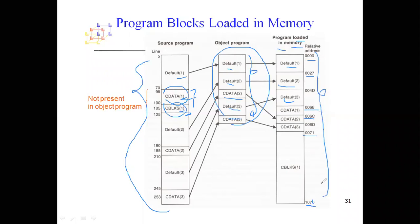This detailed explanation was to help you understand program blocks deeply. But for the exam, you only need to mention: there are three types of blocks, the block numbers assigned to each, the directive used (USE), how locations are calculated, and the structure of the LOCCTR — that is, a separate LOCCTR is maintained for each block. That information is given clearly in the notes. In the next video we will see the fifth machine independent feature: control sections.